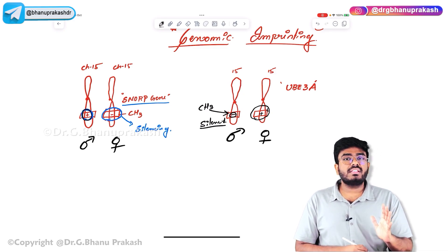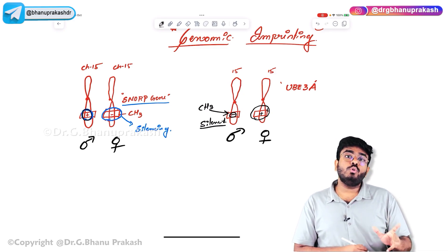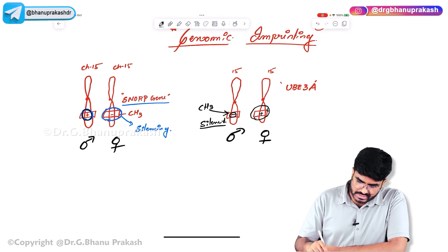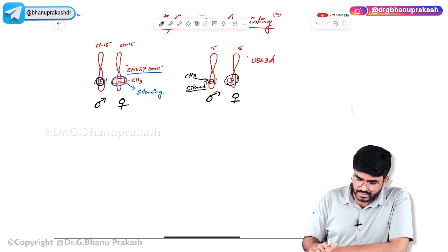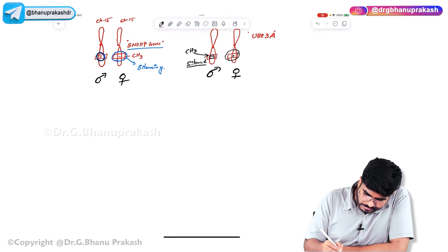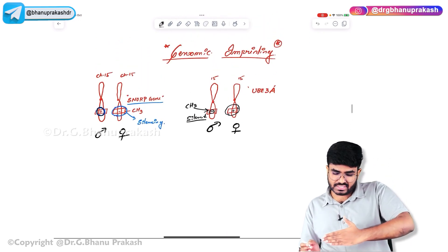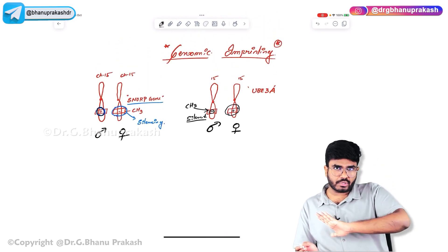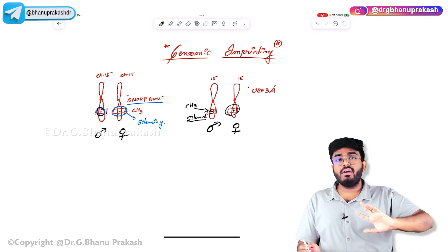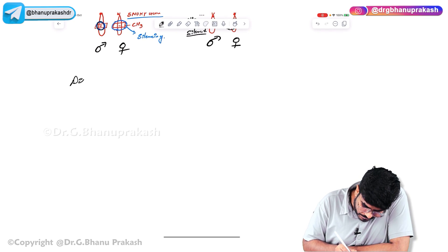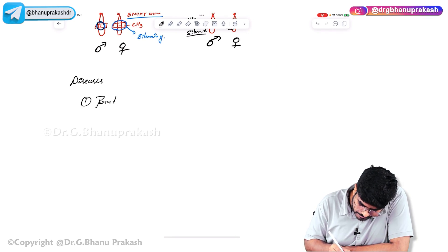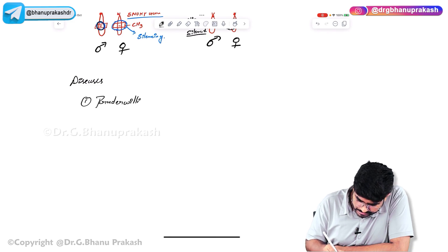Now we'll discuss two diseases that occur because of genomic imprinting. Everything discussed so far is absolutely physiological. The first disease is called Prader-Willi syndrome.